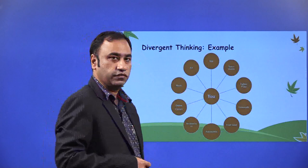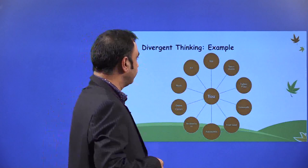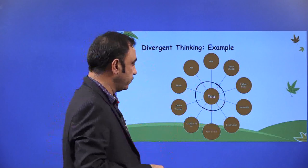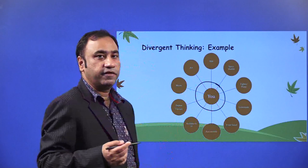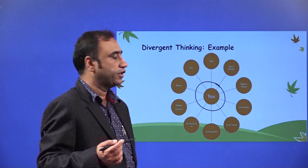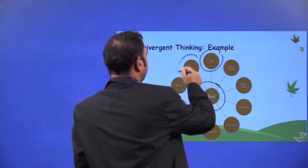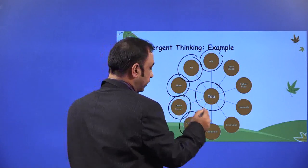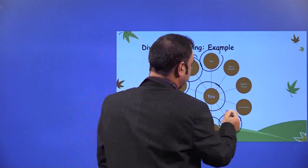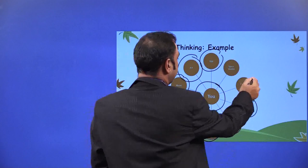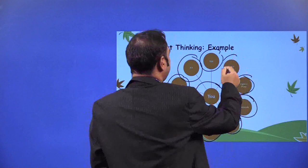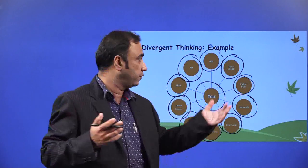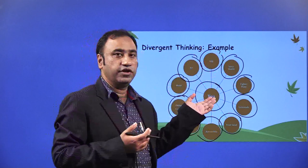Divergent thinking example. So let us go through an example of divergent thinking. This is you — you have to think about different solutions, different products, or different areas where you want to get into. You want to develop an app, you want to be in art, you want to be in music, you want to organize online classes, you want to be in architecture, you want to be in mobile, you want to eat a fruit salad, you want to make a lemonade stand, you want to be a fighter plane pilot, you want to be in the space shuttle. This is how our divergent thinking happens — we find different solutions to our career options. These are the different solutions we are trying to find from divergent thinking, and from here we move to selecting a particular solution or a particular career option.